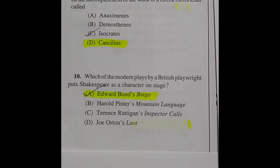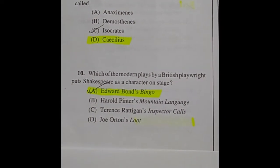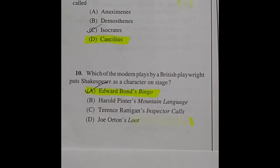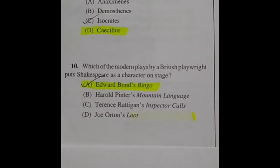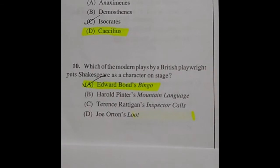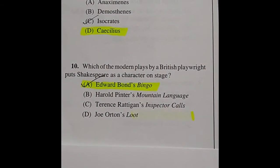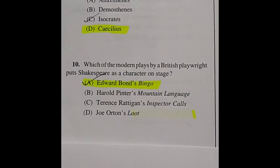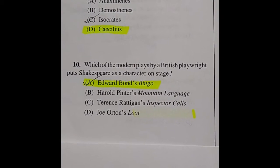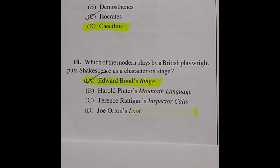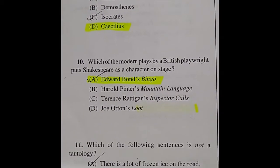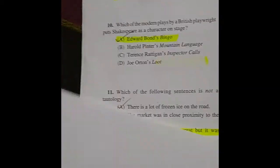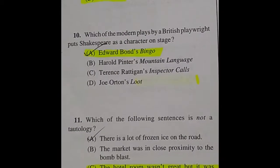Question 10: Which of the modern plays by a British playwright puts Shakespeare as a character on stage? Options include Edward Bond's Bingo, Harold Pinter's Mountain Language, Terence Rattigan's Inspector Calls, and Joe Orton's Loot. The right answer is option A: Edward Bond's Bingo.